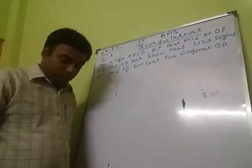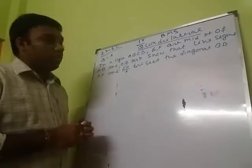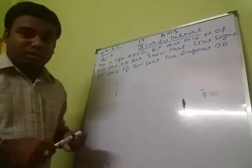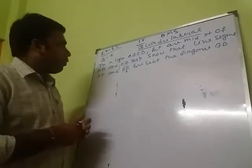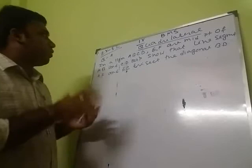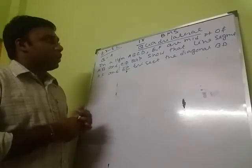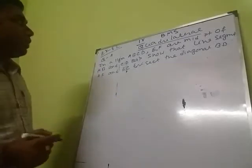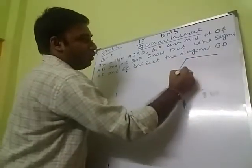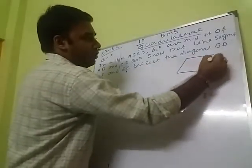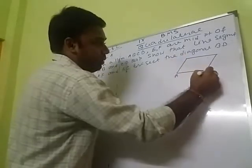Welcome students of Class 9, welcome to our e-learning classes of Modern Model School. Today I will solve question number 4 of Exercise 8.2 of the chapter on quadrilaterals. In a parallelogram ABCD — parallelogram means opposite sides are equal and parallel.